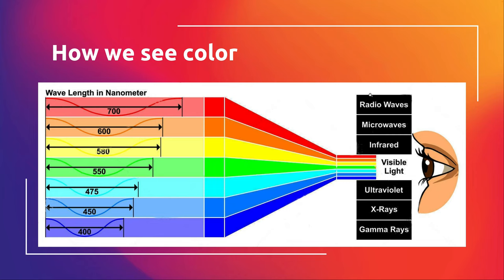The spectrum — not very scientific — but you have all these different waves above and below the wavelengths of visible light that you cannot see with the naked eye. Then you have these visible light wavelengths, and these are the different wavelengths, give or take a nanometer if you're interested. That's basically how we perceive different colors through these observed wavelengths.